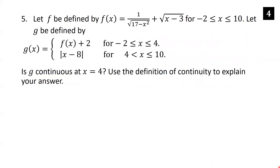Let f(x) = 1/√(17−x²) + √(x−3) for x in [−2, 10]. Let g be piecewise: g(x) = f(x)+2 for x in [−2, 4], and g(x) = |x−8| for x in (4, 10]. Is g continuous at x=4? For the left-hand limit, we use the first piece and plug in x=4: f(4) + 2.